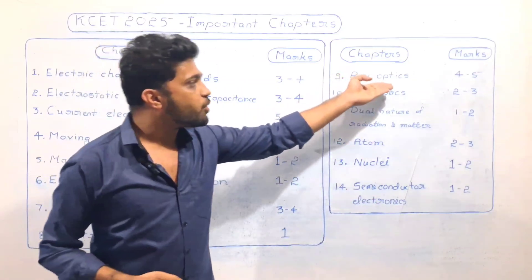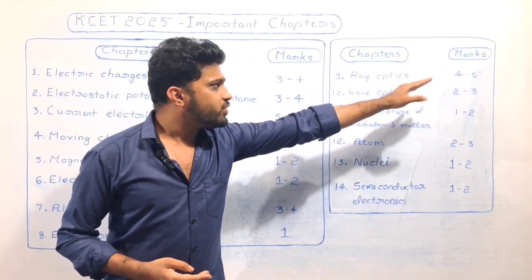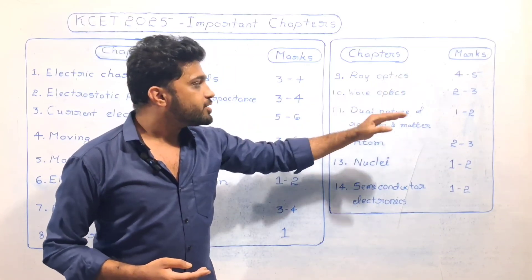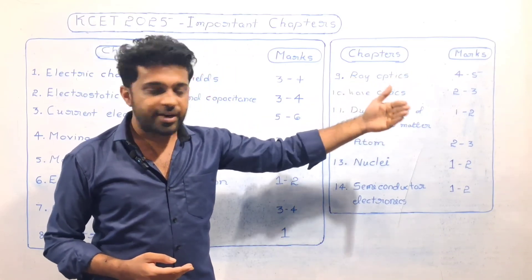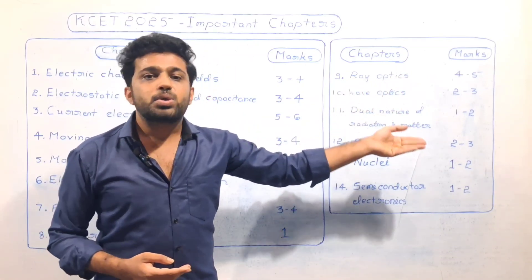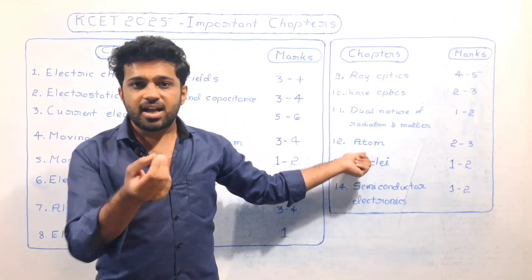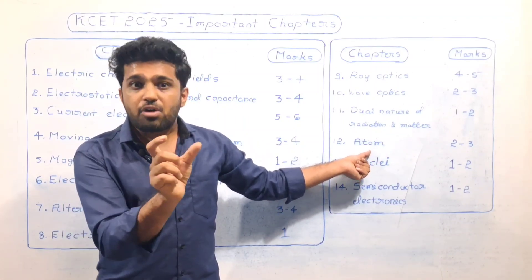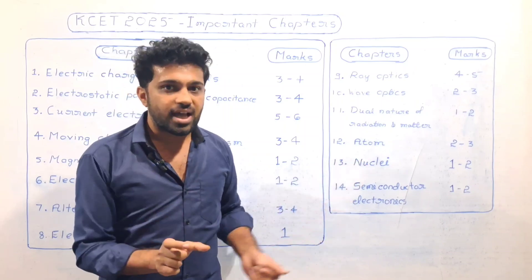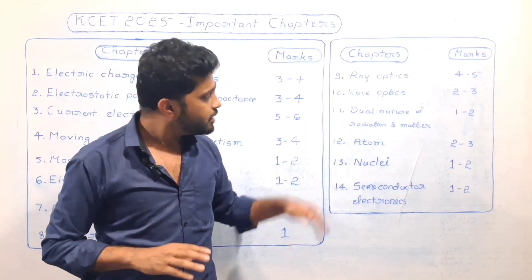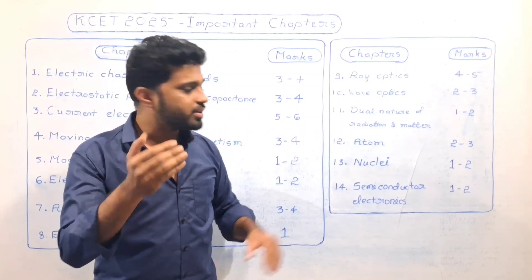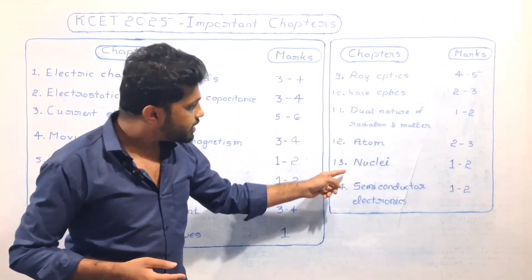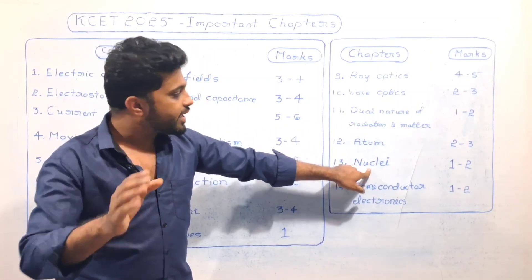Ray Optics: 4 to 5 marks. Wave Optics is the next chapter. Dual Nature of Radiation and Matter — this is also covered. Atoms: 2 to 3 marks, based on atomic models and energy level equations. Nuclei: 3 to 4 marks. The number of formulas is important here — focus on mathematical expressions and physical quantities in each chapter.